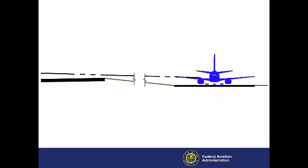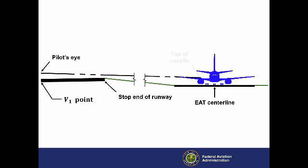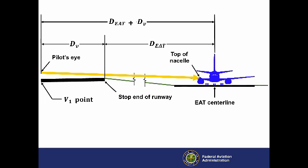This unscaled elevation view shows the stop end of the runway and the EAT centerline at a lower elevation. To find the required height of the screen above grade, first calculate the slope of the imaginary line from the pilot's eye at the V1 point to the top of the engine nacelle of an airplane on the EAT. This slope is the difference in elevation between the pilot's eye at the V1 point and the top of the engine nacelle of an airplane on the EAT, divided by the sum of the horizontal distance between the V1 point and the EAT centerline, or DEAT plus DV, where DEAT is the distance from the stop end of the runway to the EAT centerline.